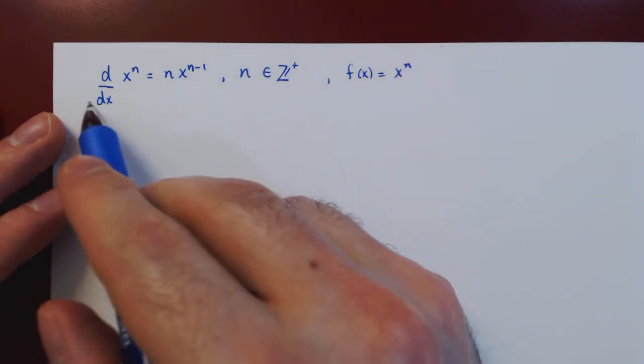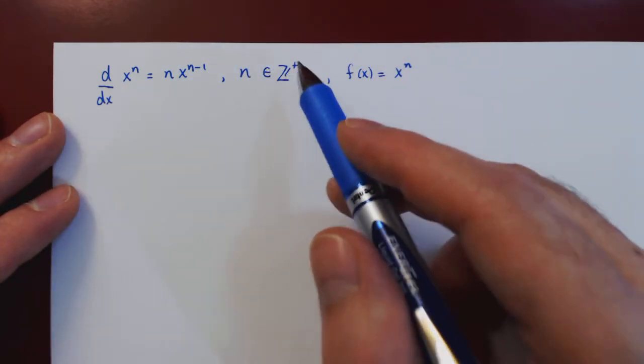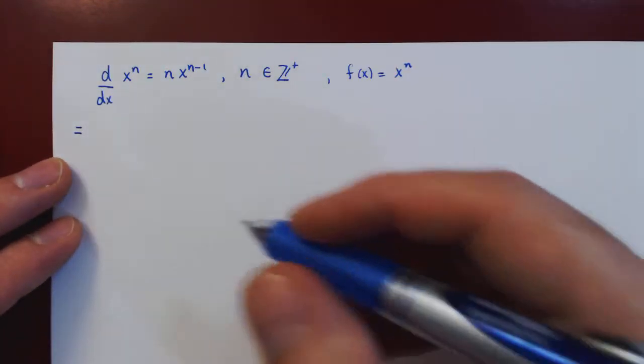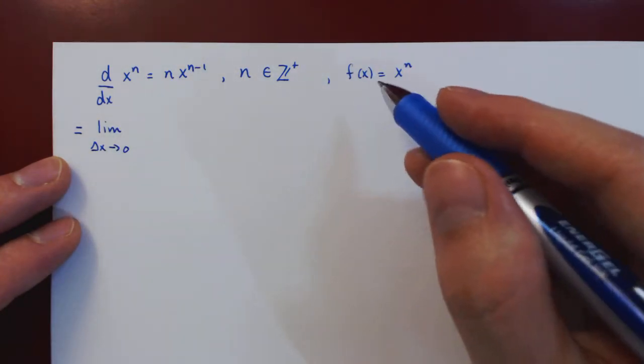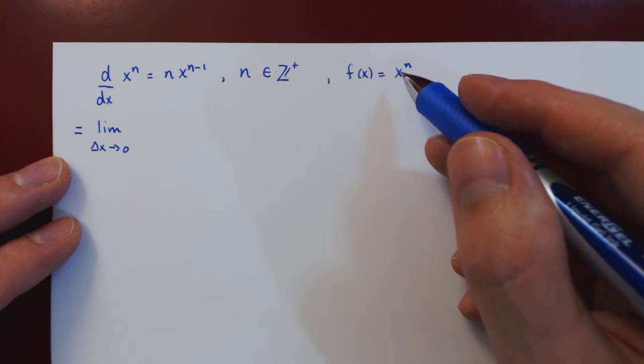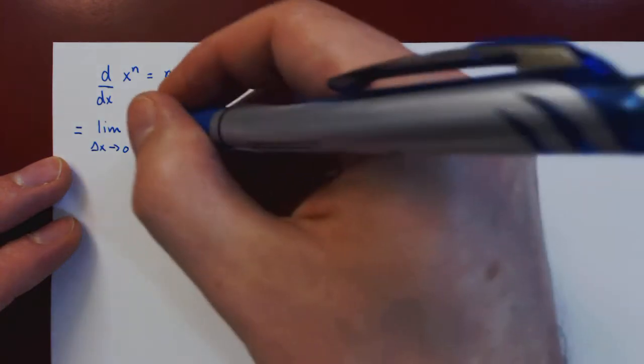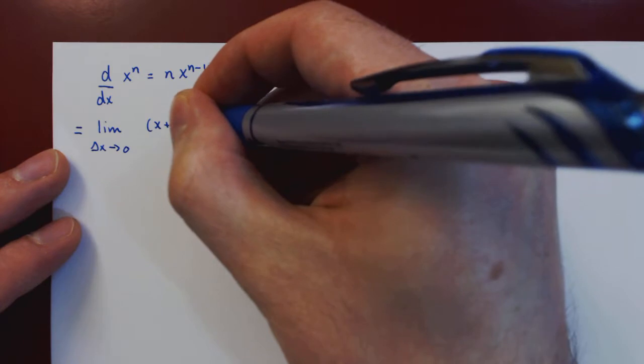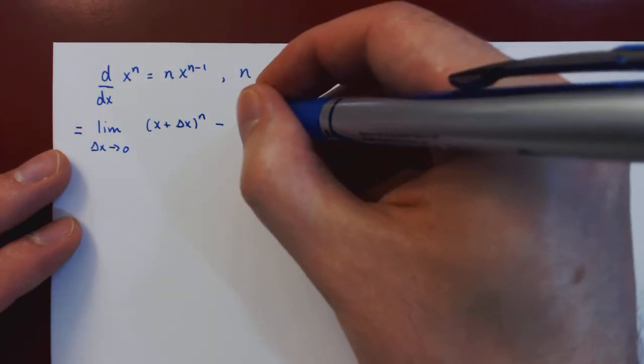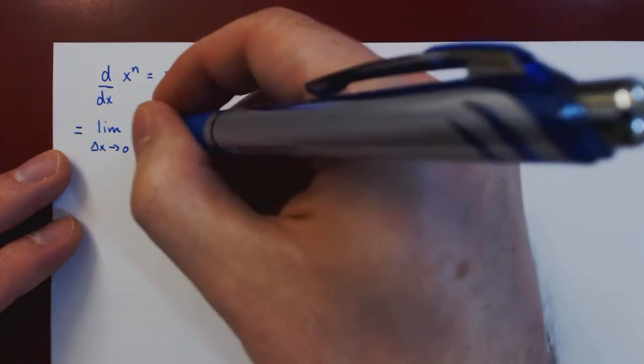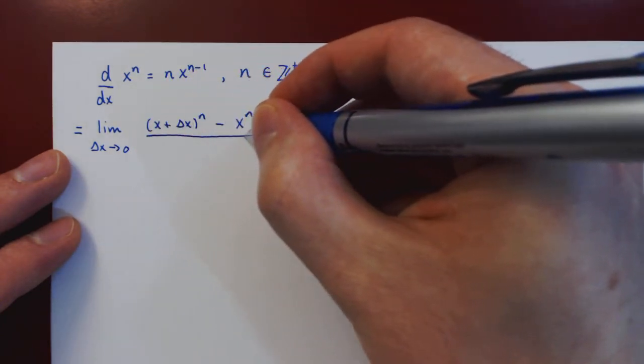And to prove that this rule holds in the case of a positive integer power, we have to go back to square one, the definition of the derivative, which is the limit as the change in x, delta x, approaches zero of the change in the function. So f of x plus delta x, this will give us x plus delta x to the n, then minus f of x, which is x to the n, divided by delta x.